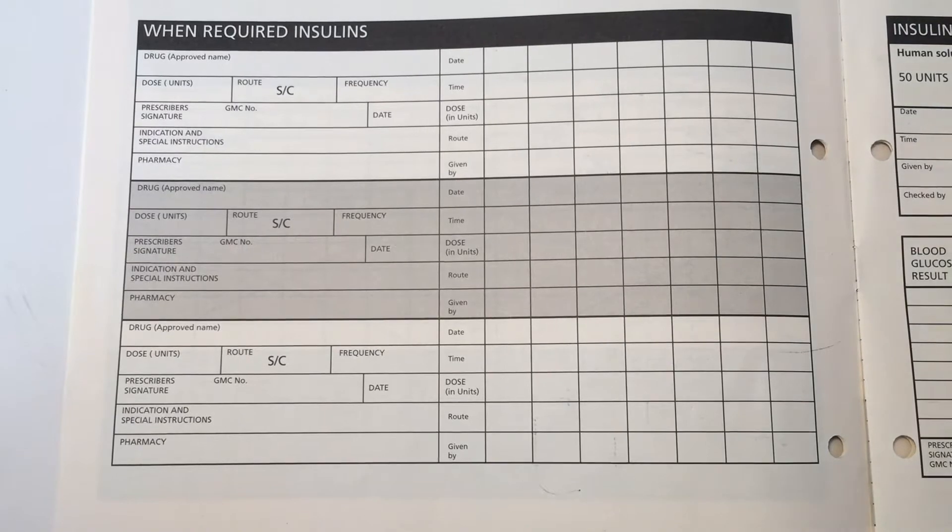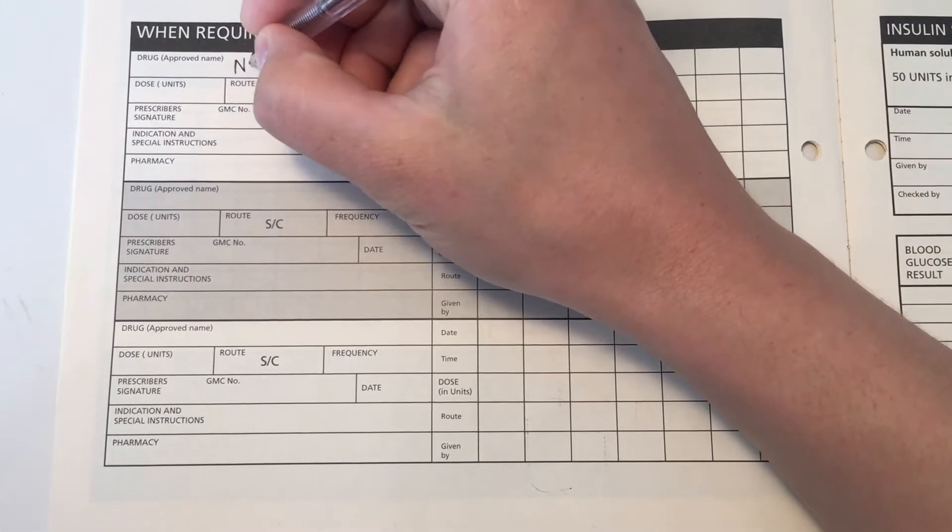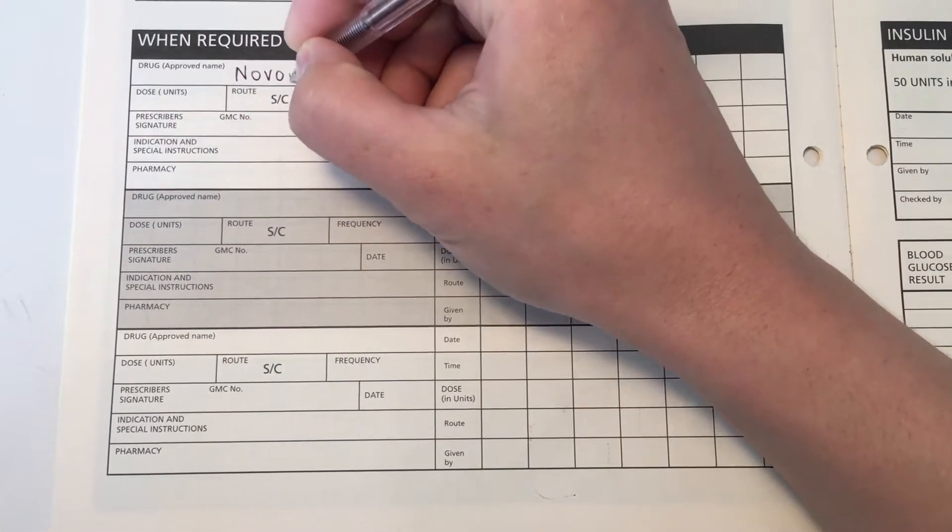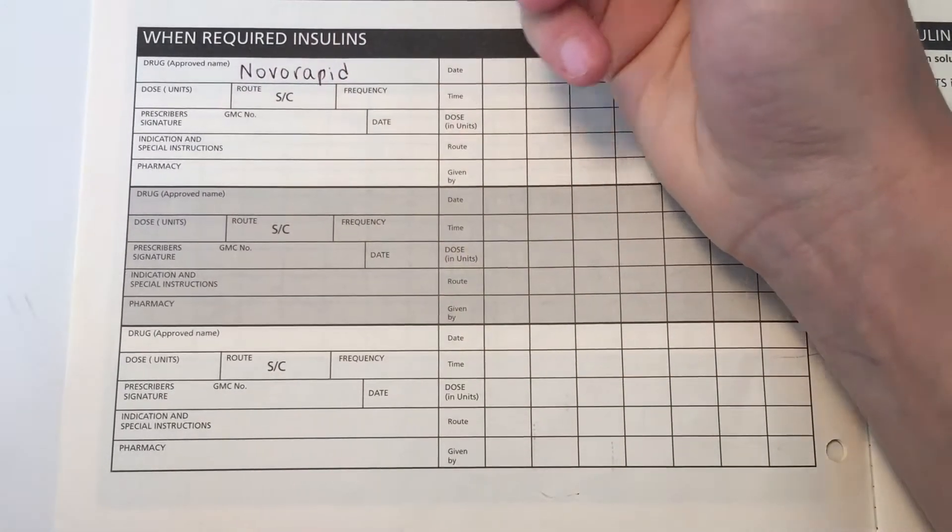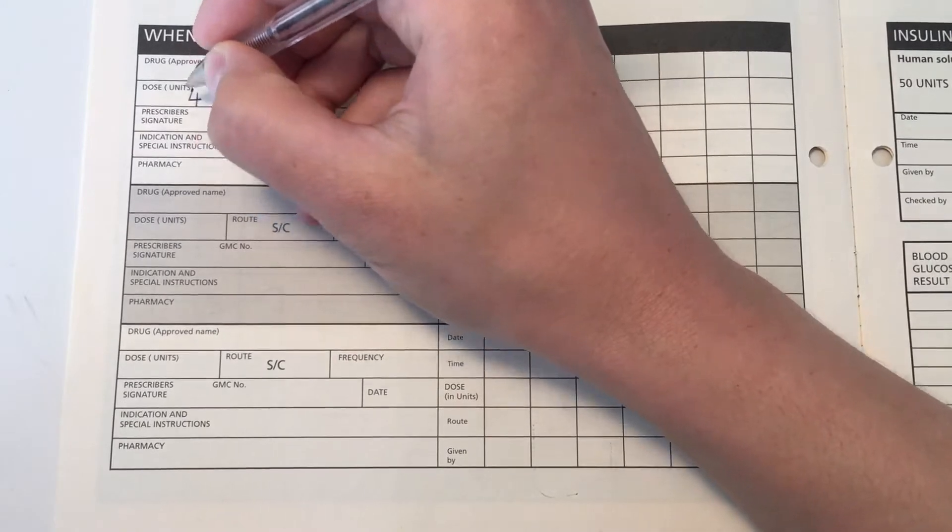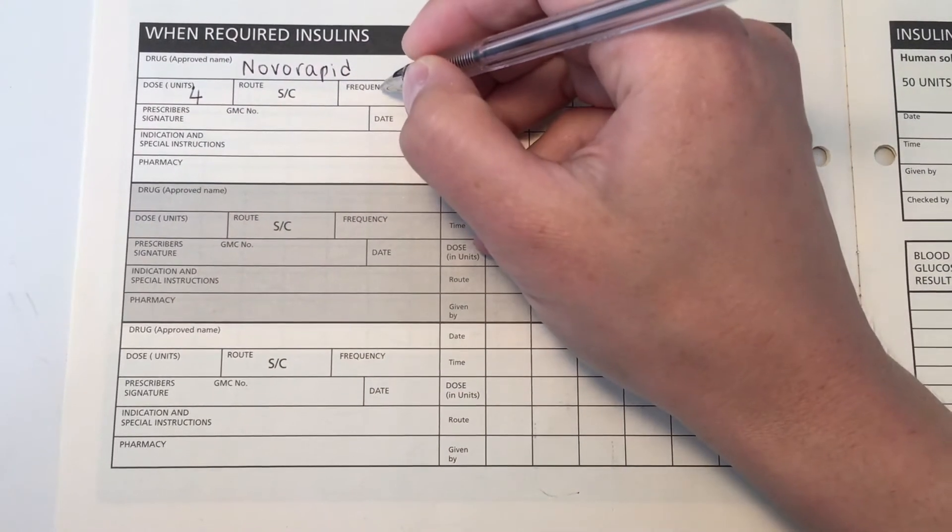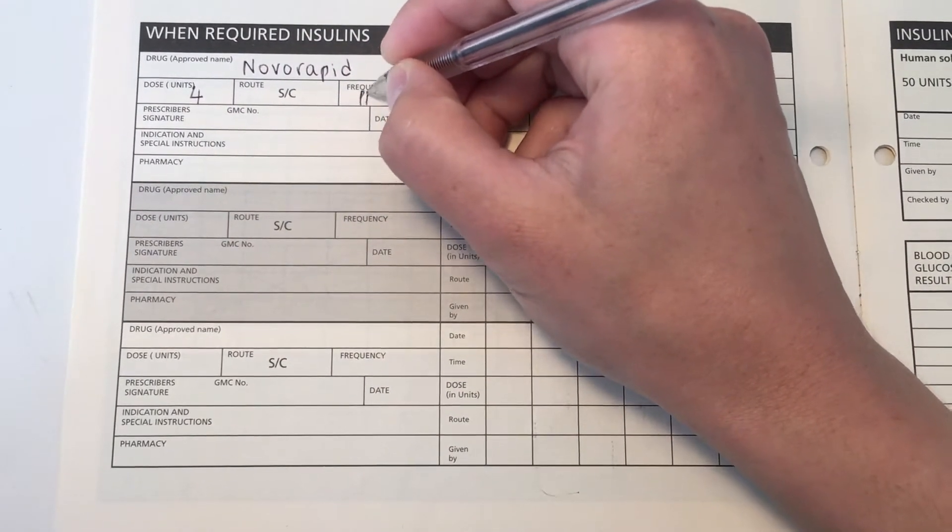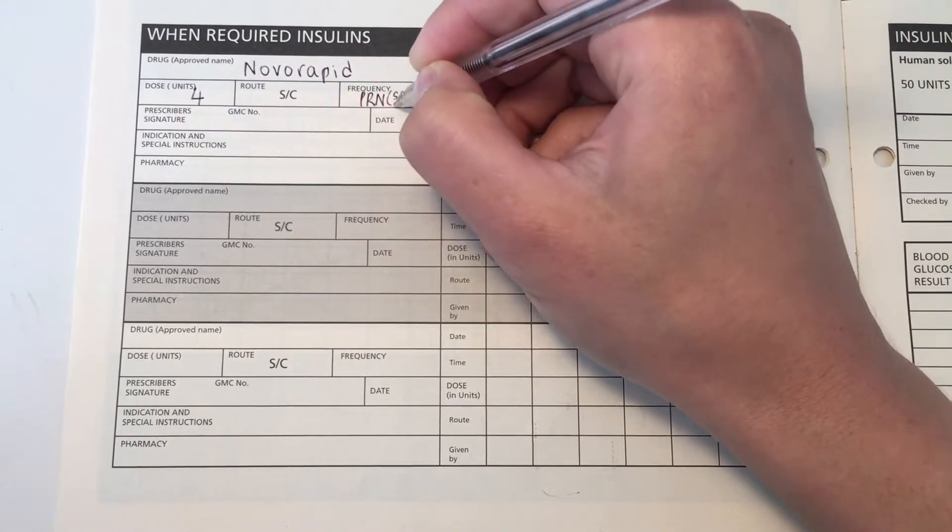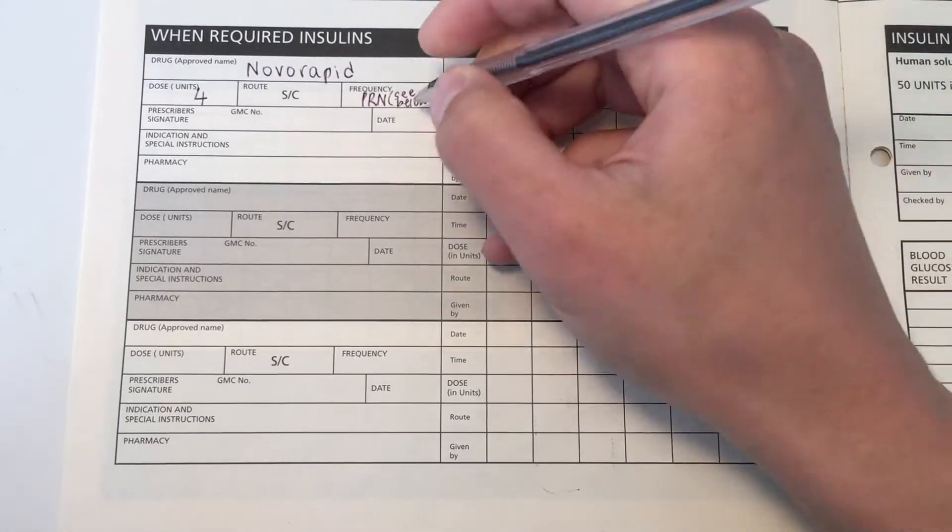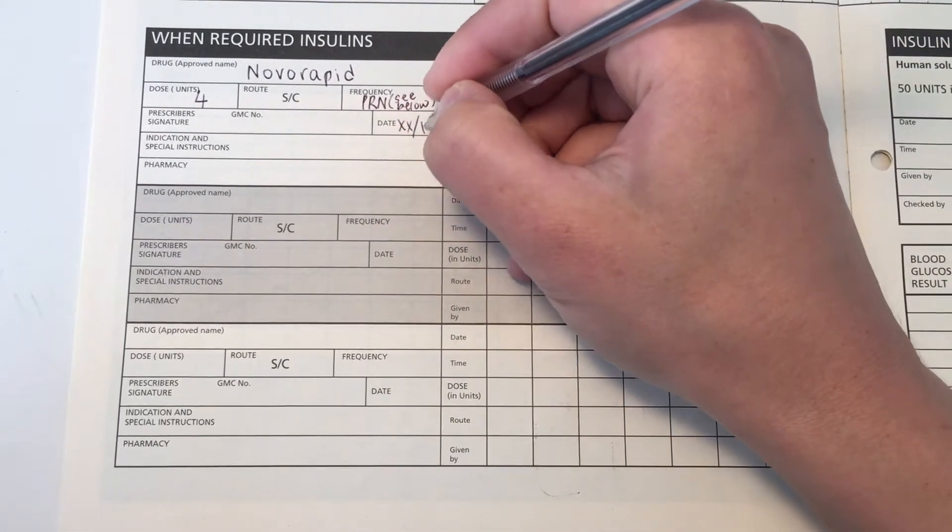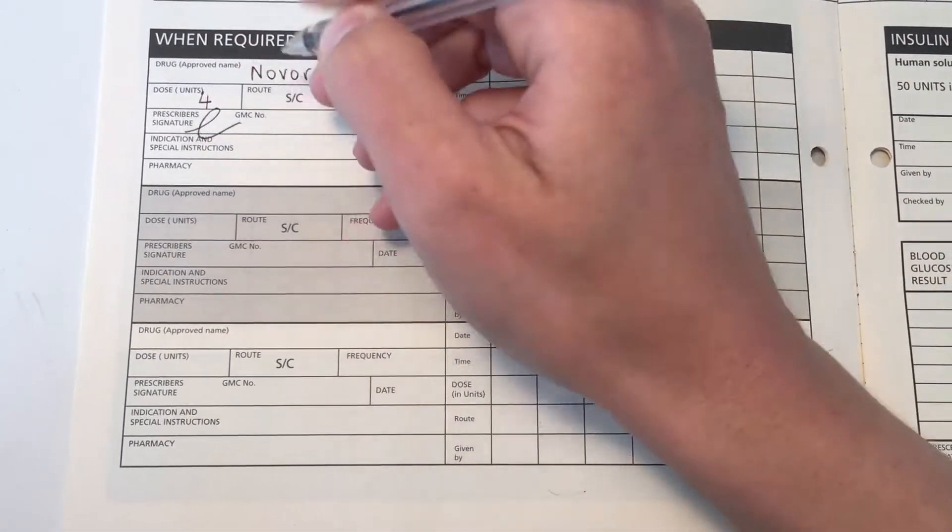Now the as required section, this is when you have a patient who has high BMs and you want to prescribe Novorapid. So Novorapid is a rapid acting insulin analogue which means it's very similar to insulin made by the body but is absorbed faster and is used to reduce high blood sugars. This is a bog standard rapid acting insulin that you'll see given in hospital.